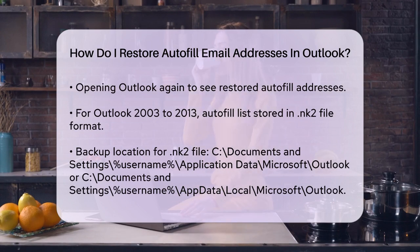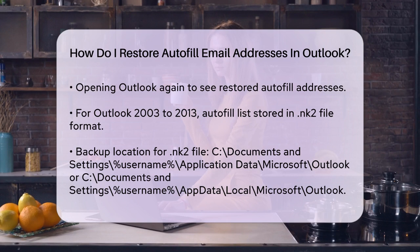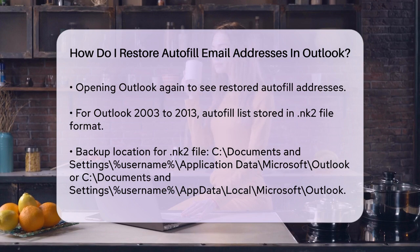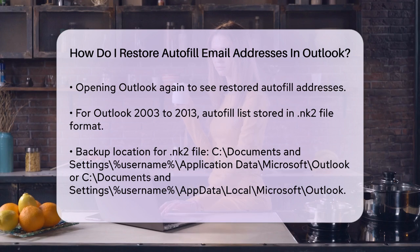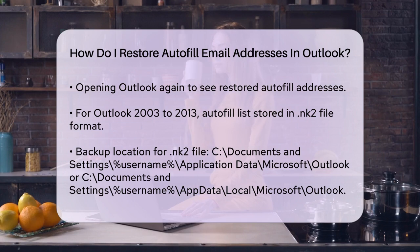For older versions of Outlook, like Outlook 2003 to 2013, the process is slightly different. The autofill list is stored in a file called NK2. You can find this file in C:\Documents and Settings\[Username]\Application Data\Microsoft\Outlook, or C:\Documents and Settings\[Username]\AppData\Microsoft\Outlook directory. Backup this file from your old computer and restore it to the same location on your new computer.